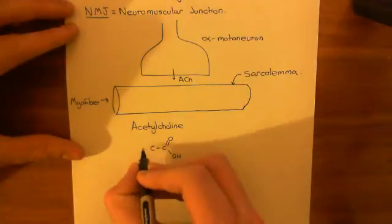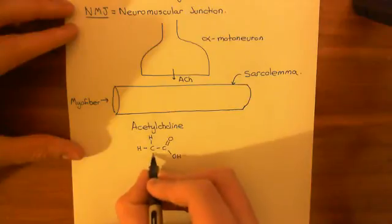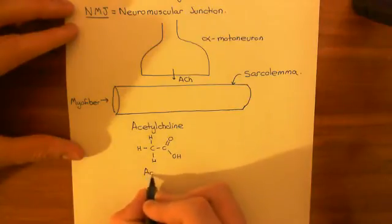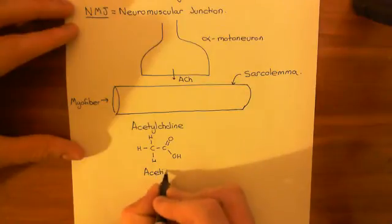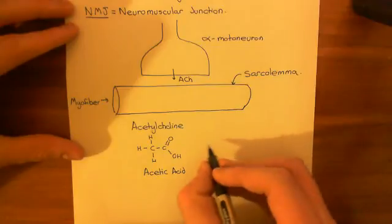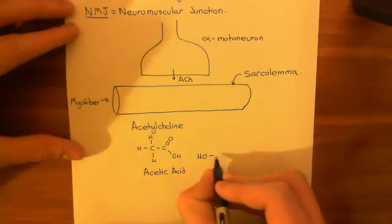So, acetic acid is the old name for ethanoic acid, or what chemists would now call ethanoic acid. So, it's a two-carbon, fully saturated carboxylic acid. So, this is acetic acid. Okay, the other component of acetylcholine is that you then have the alcohol choline.